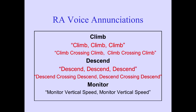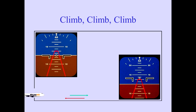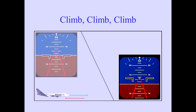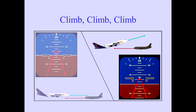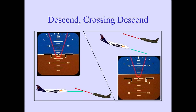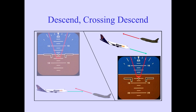When a new RA is issued by TCAS, one of five voice enunciations will sound. TCAS commands a climb with the voice enunciation 'Climb, climb, climb,' and the red pitch command will appear on the PFD. Climb at the pitch required to keep the airplane outside the red area. In another example, a Descend-Crossing-Descend command is given: 'Descend, crossing, descend.' Smoothly and promptly start a descent, crossing through the threat aircraft's altitude, but with safe separation.